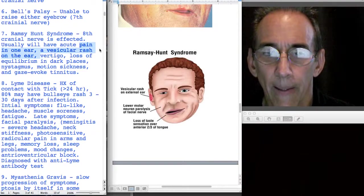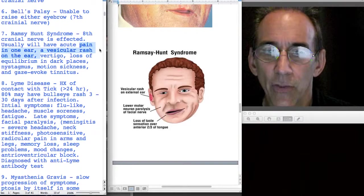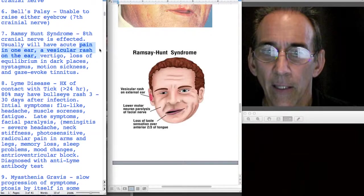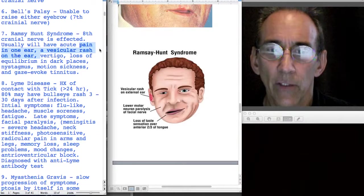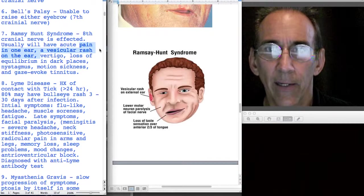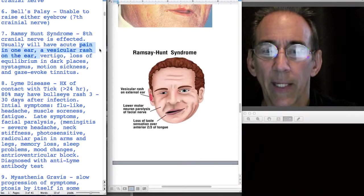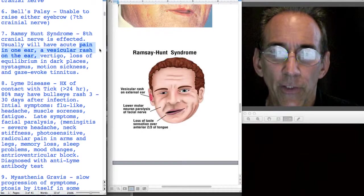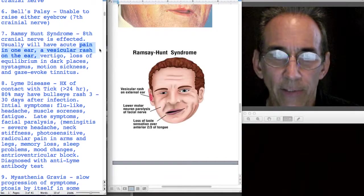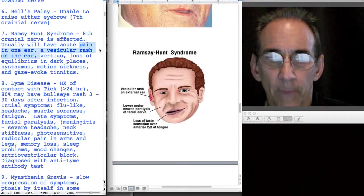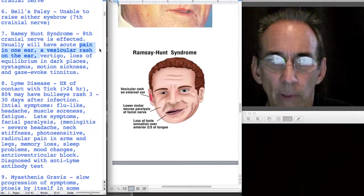The forehead not drooping, you should have these other symptoms - pain in the ear, lower facial drooping - so that you can recognize Ramsey Hunt syndrome versus Bell's palsy.